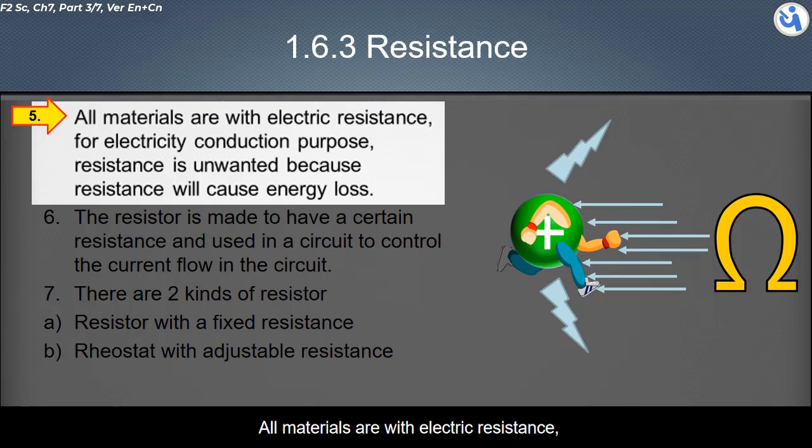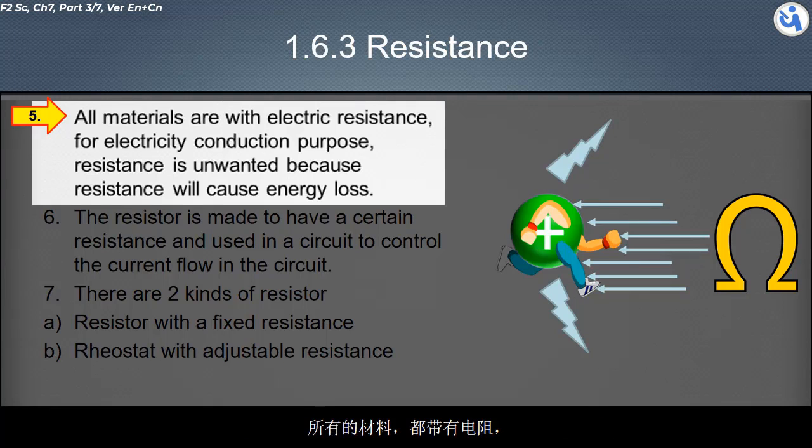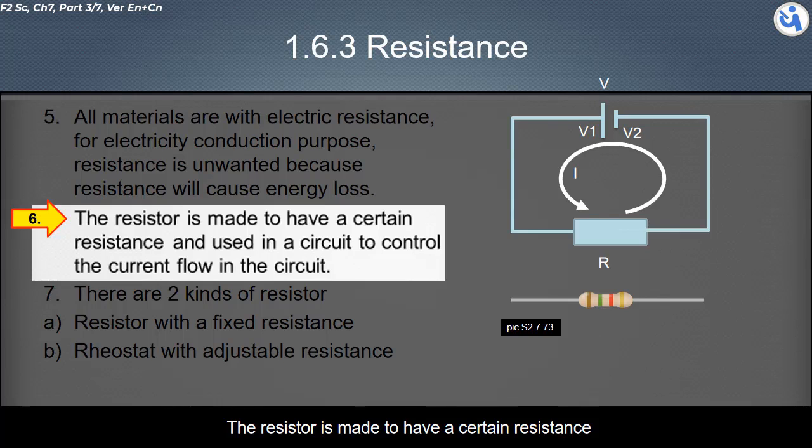All materials have electric resistance. For electricity conduction purposes, resistance is unwanted because resistance will cause energy loss. The resistor is made to have a certain resistance and is used in a circuit to control the current flow in the circuit. When a lower current is required, a resistor with higher resistance will be installed.